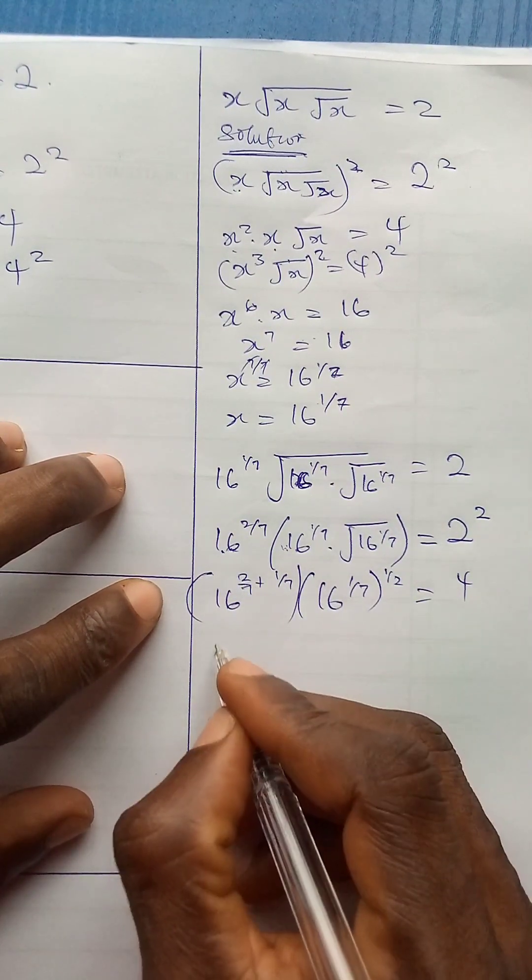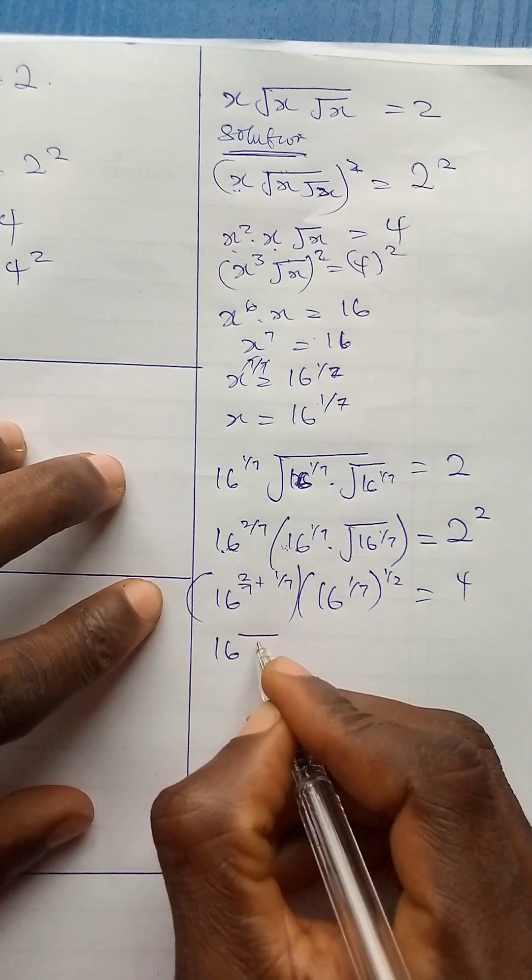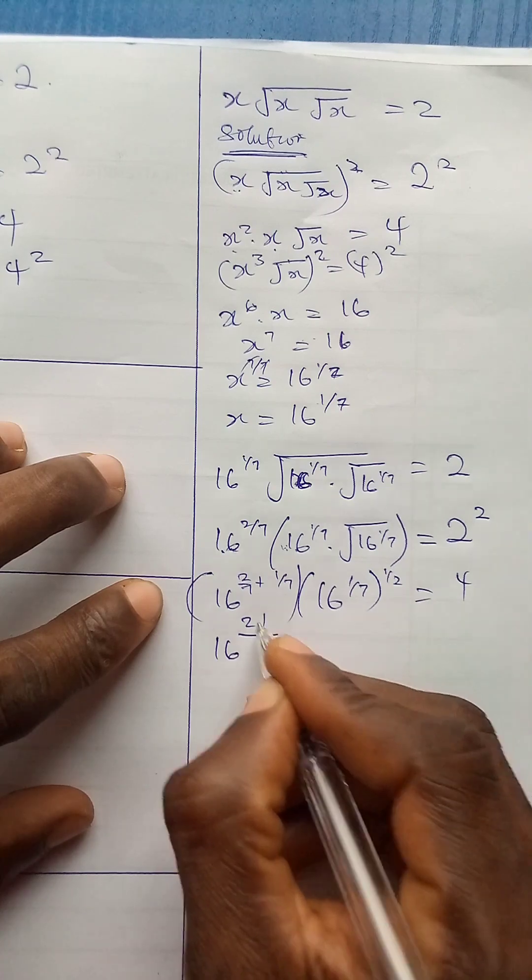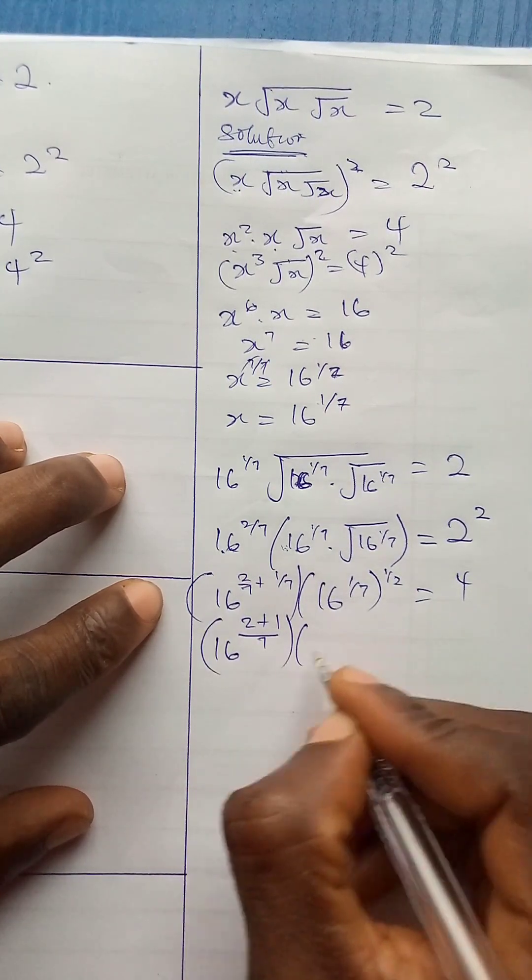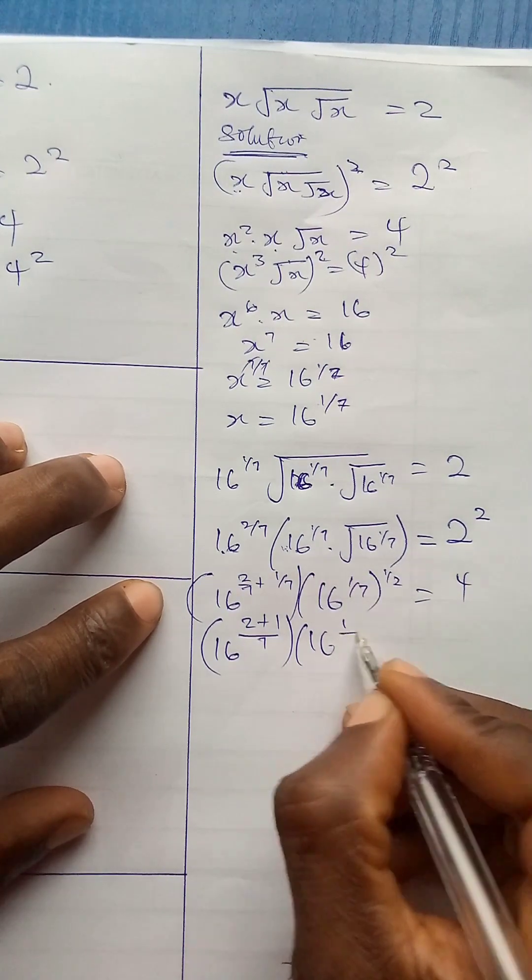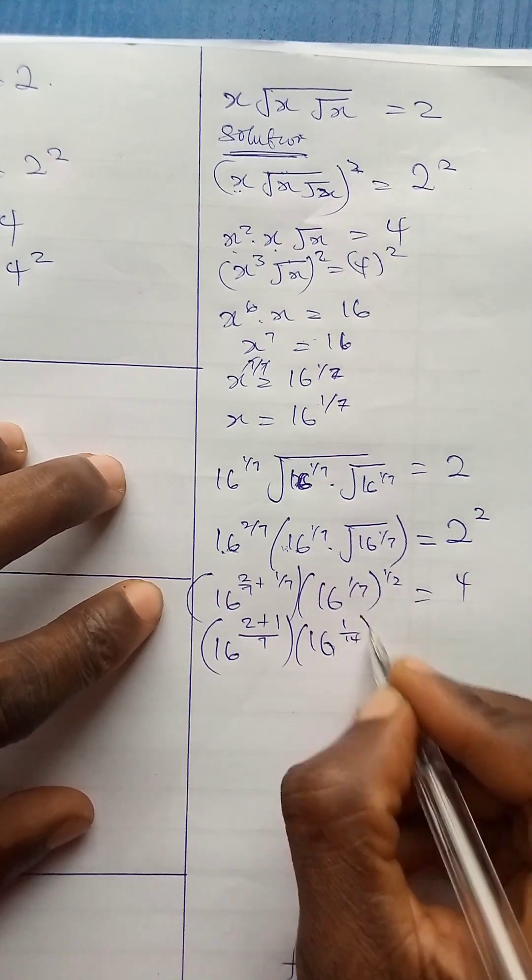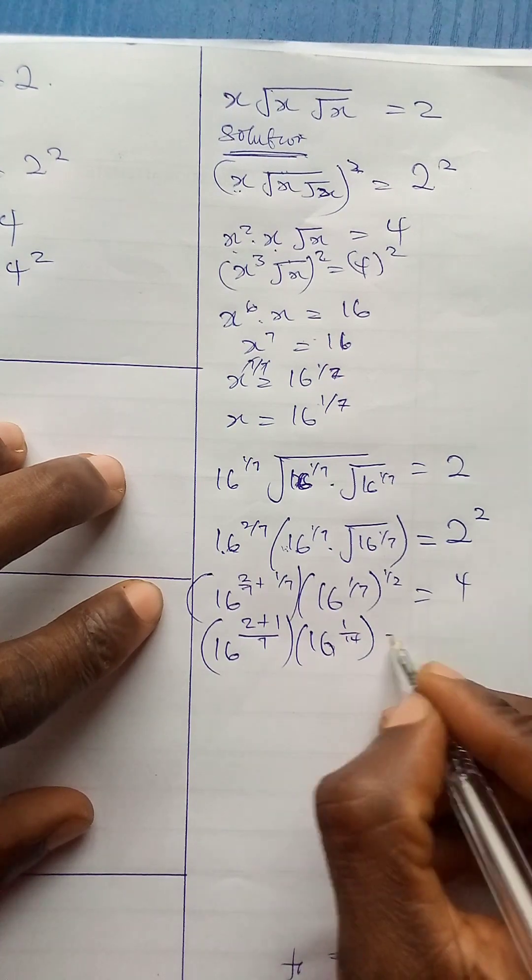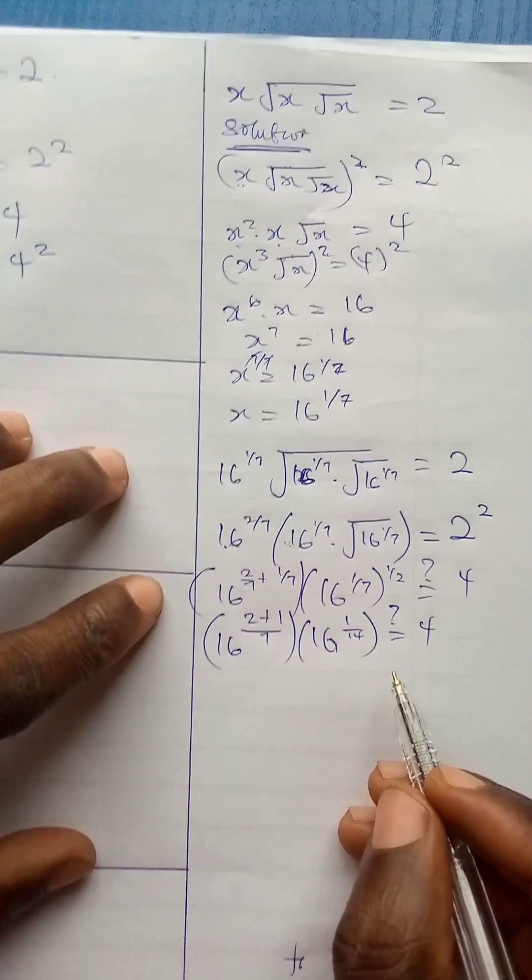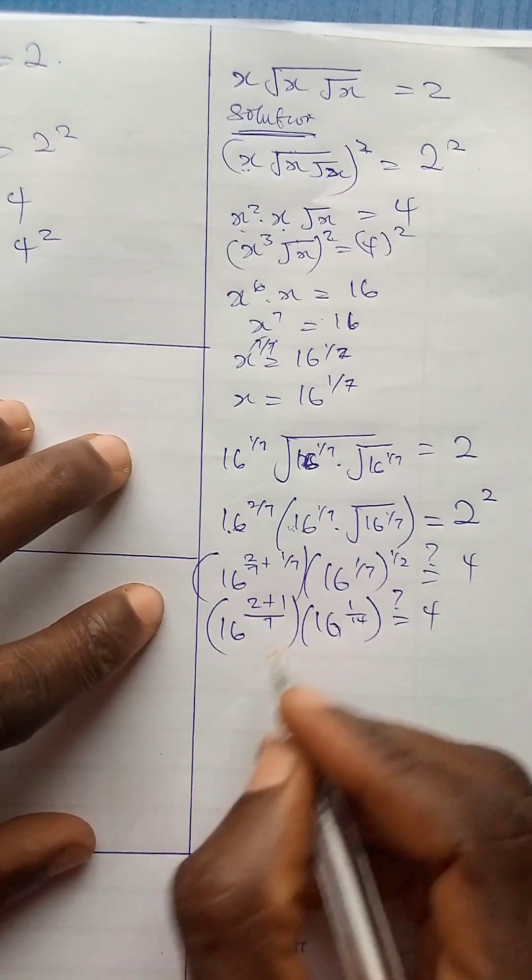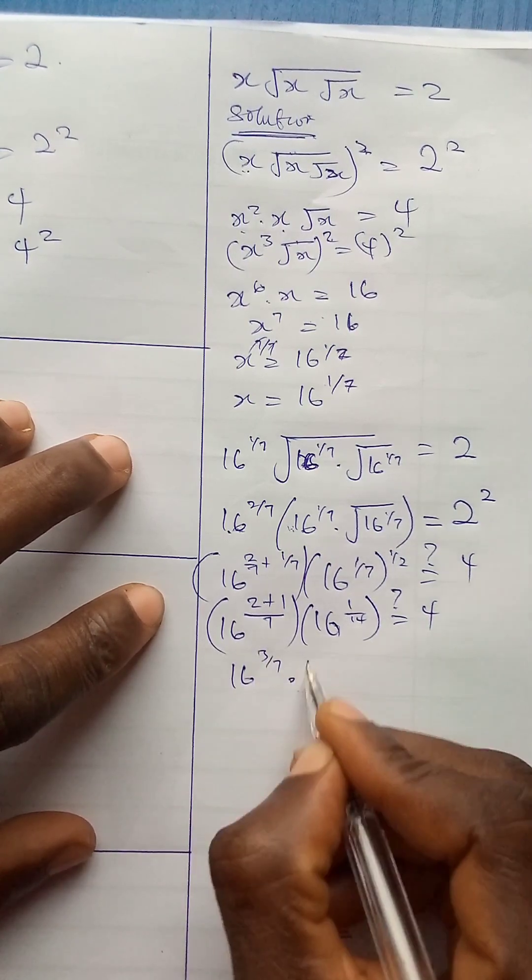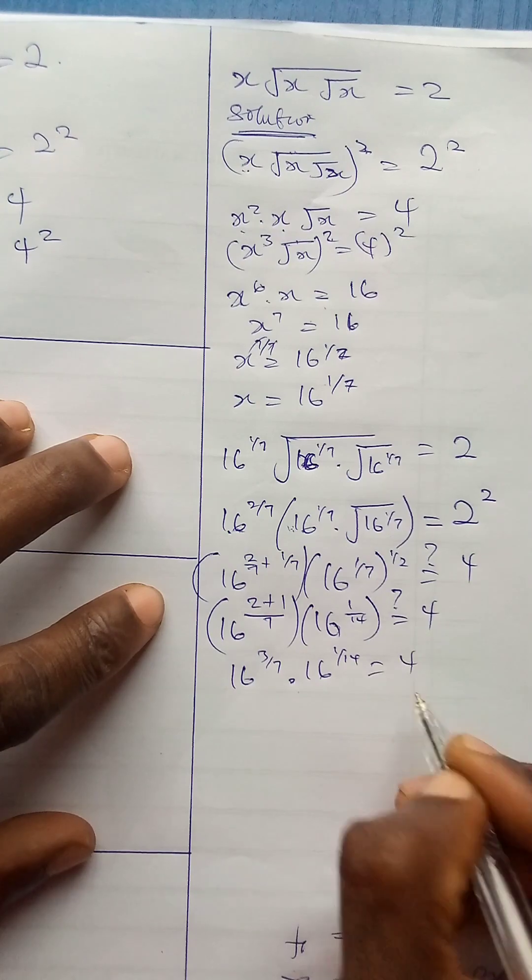Now, adding these 2 together, I have 16, the LCM is 7, and this is 2 plus 1, and this is 16, 1 times 1 is 1, 7 times 2 is 14. So I have 16 to power 1 over 14, equals to 4. Remember, I'm still trying to check if this and this will be equal. 2 plus 1 is 3, so 16 to power 3 over 7, times 16 to power 1 over 14, will give me 4.